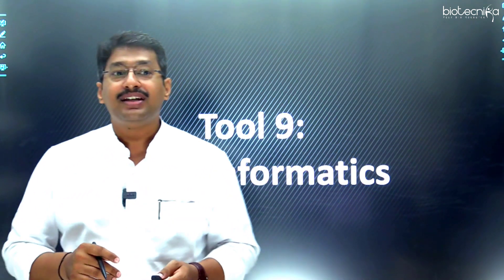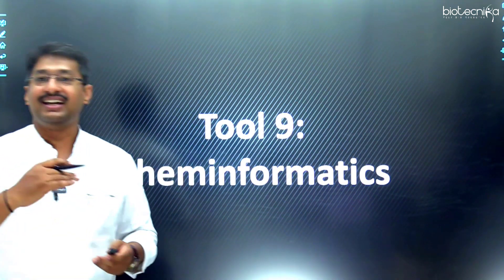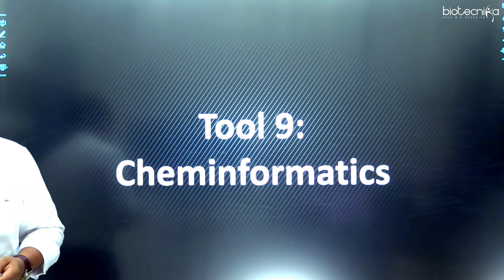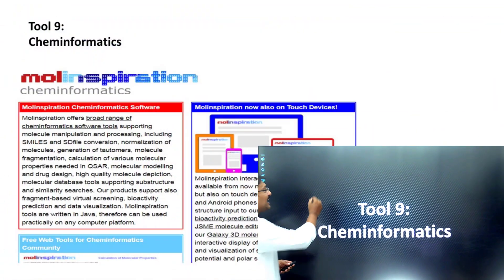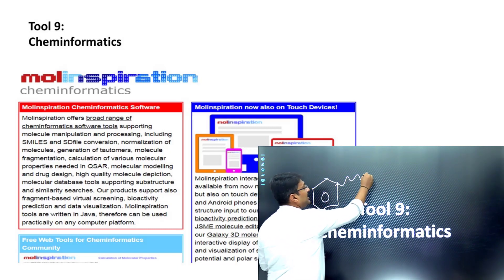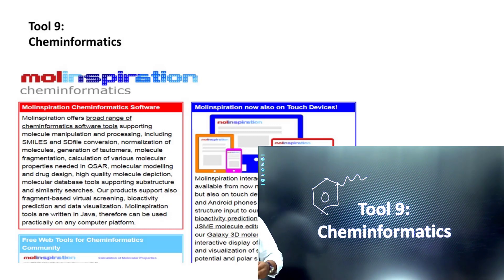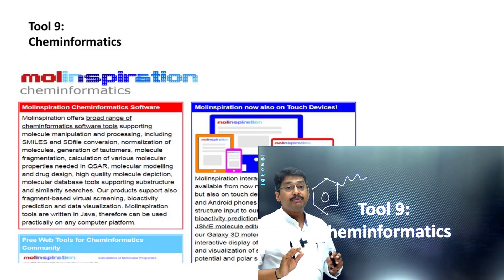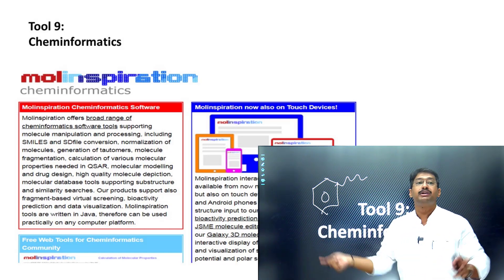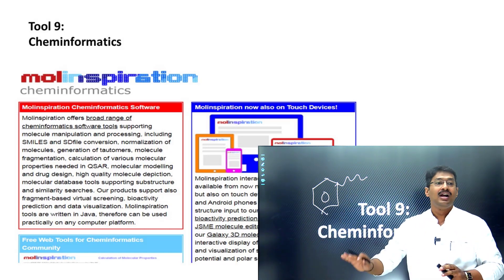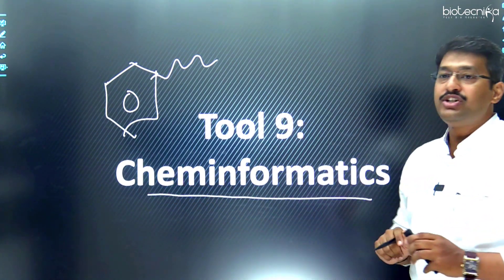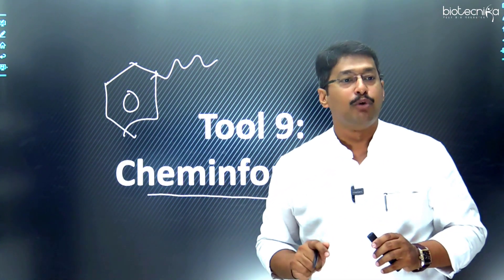The ninth tool is for designing a ligand molecule — a cheminformatics tool. In cheminformatics I can actually draw a structure and look into its predictability as a probable drug. I am not claiming it as a drug, but looking for its prediction as the most probable drug. This analysis can be done using the online cheminformatics tool called Mol Inspiration.